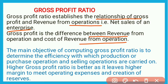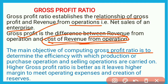The main objective of computing gross profit ratio is to determine the efficiency with which production or purchase operations and selling operations are carried on. A higher gross profit ratio is better as it provides a higher profit margin. If gross profit is higher, this means we have a higher profit margin, which helps meet operating expenses and create reserves.